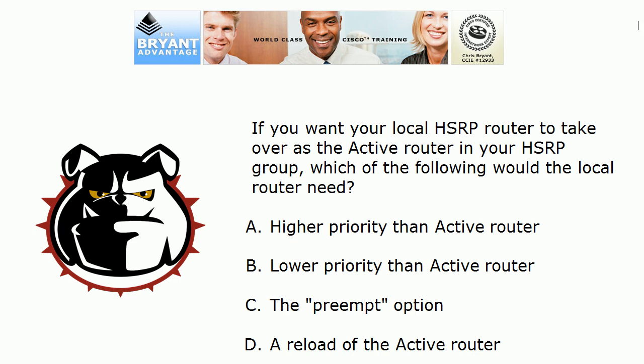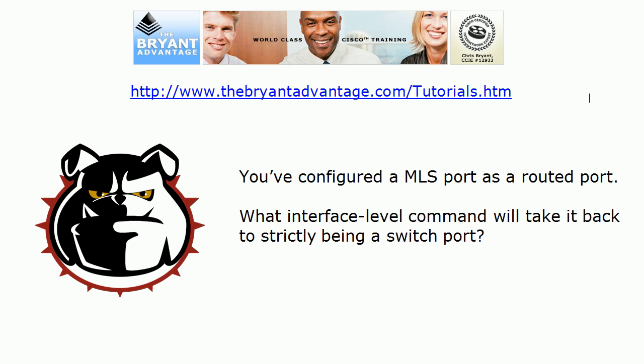As for the HSRP question about taking over as the active router — this topic tends to trip people up. The higher priority wins in HSRP, so we need to give the local router a higher priority than the active router. The default HSRP priority is 100, so it will need to be higher than 100 assuming the active router is still at default. We also must have the preempt option configured on the local router — without it, even a priority of 200 won't cause it to take over as the active router. Reloading the active router is not necessary and doesn't help.